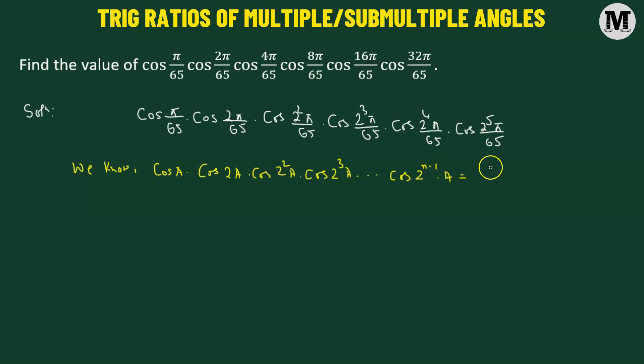Then this is given by sine of 2 raised to the power of N times angle A divided by 2 raised to the power of N multiplied to sine of angle A.